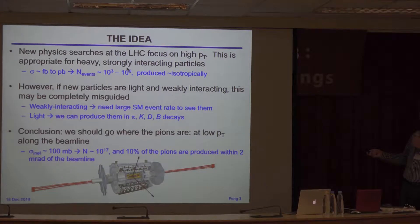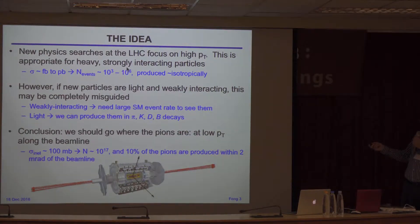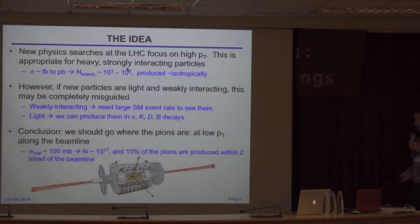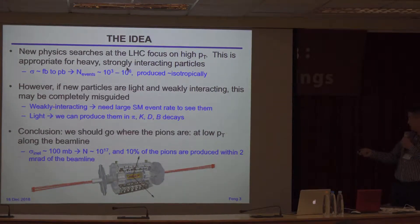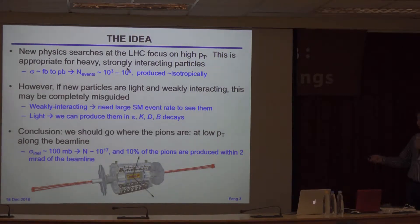If a particle is weakly interacting — like micro-charged or milli-charged — you need extremely large event rates to see them. Very rare processes mean a thousand or a million events is nowhere near enough. Second, if they're light you can produce them in decays of pions, kaons, and B mesons, so you should go where these things are prevalent, which is not at high PT. The conclusion is: if you want to look for light, weakly interacting particles, go where the pions are — at low PT along the beamline.